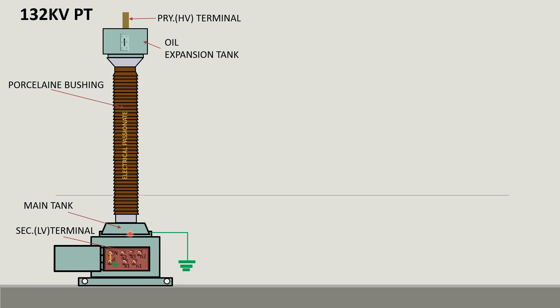Through the hollow space of cylindrical insulator petticoat, HV lead is passed toward HV winding placed at main tank. Main tank, expansion tank and hollow cylinder of insulator are filled with transformer oil.